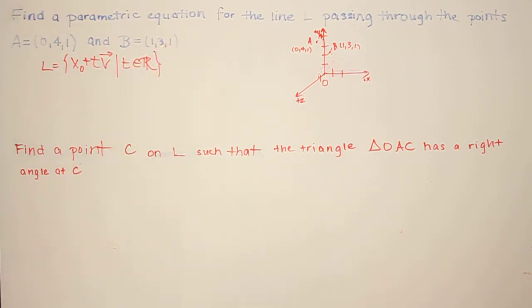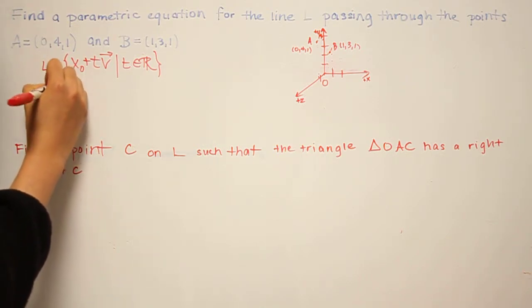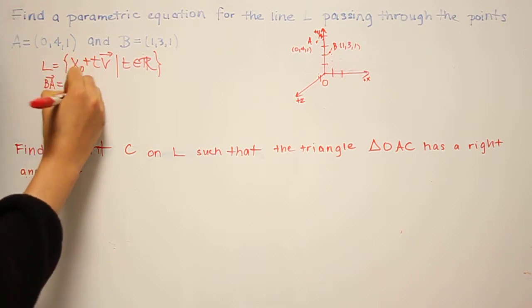In this case, to obtain a direction vector, we can use a vector whose head is at either A or B and whose tail is at the other. So say we put the head at B, then the direction vector would be B minus A.